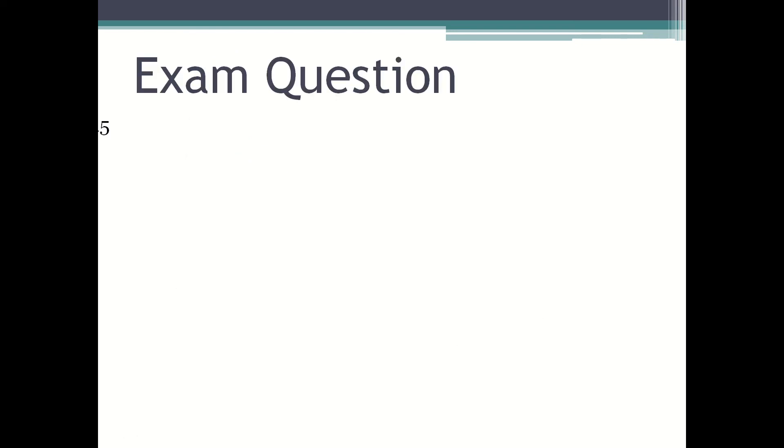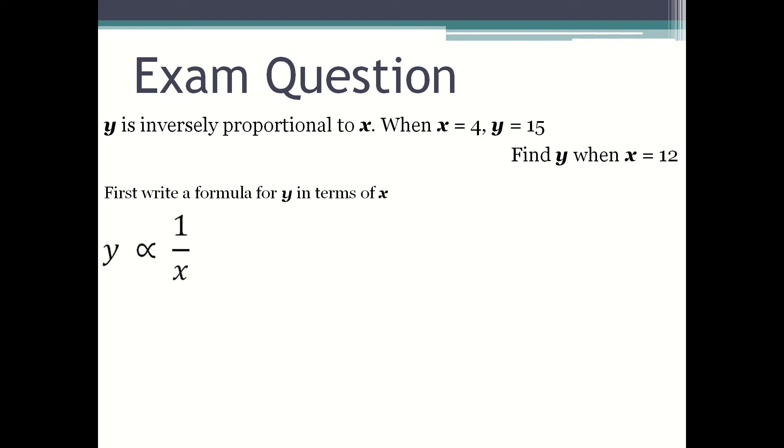Exam question. y is inversely proportional to x. When x is 4, y is equal to 15. Find y when x is equal to 12. First, write a formula for y in terms of x. This shows that y is proportional to one over x, which is converted to the equation form of y equals k over x.